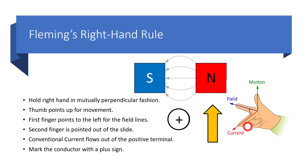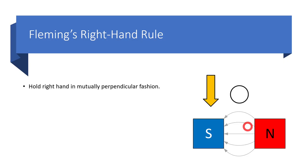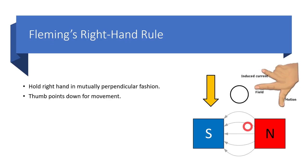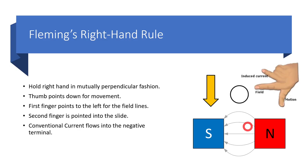In the second example, we again hold the right hand in mutually perpendicular fashion, but now the movement is in the downward direction, so we flip our hand over. The thumb points down, the first finger still points from right to left, and the second finger now points into the screen. Since conventional current flows into the negative terminal, and it's flowing into the screen or paper, we mark it with a minus sign.